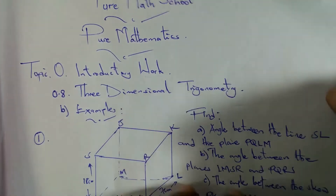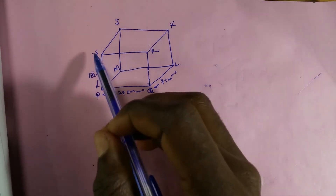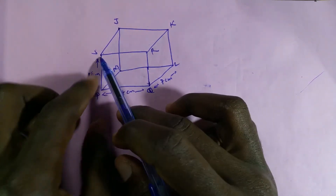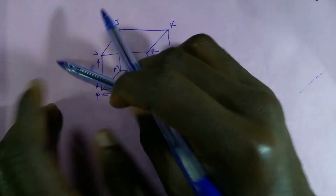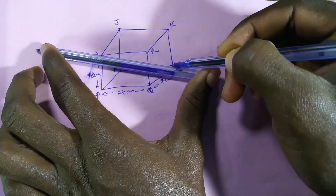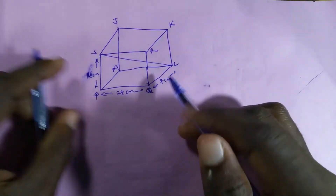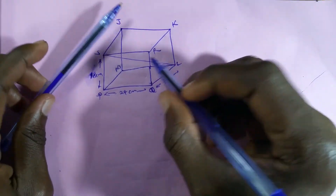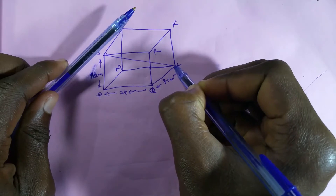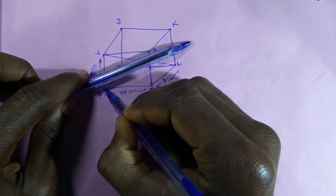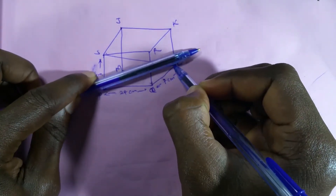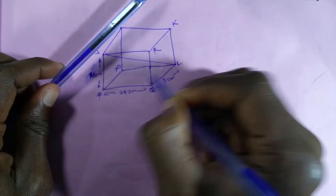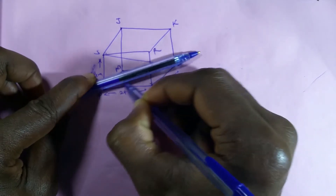For part (a), we need the angle between line SL and plane PQLM. We identify points S and L on the cuboid and join them to make line SL. The angle between line SL and plane PQLM is found by projecting SL onto the plane. The projection from S lands on the plane, and we can draw a line from that point to L — this gives us the diagonal LP on the base plane.